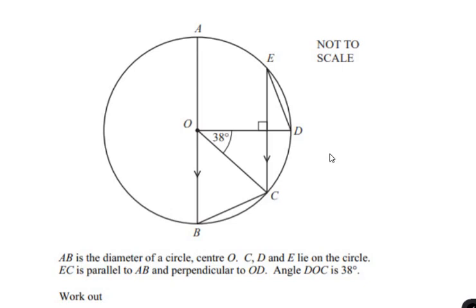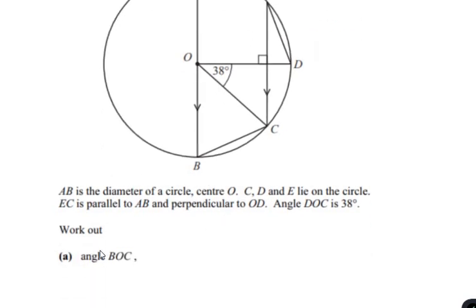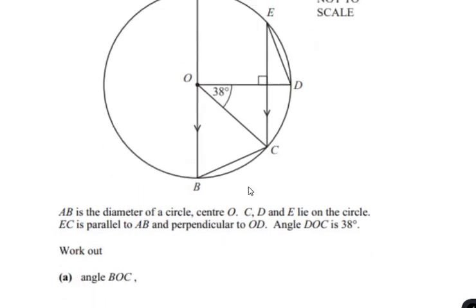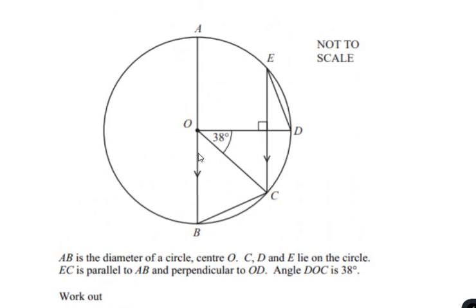Hello and welcome to my channel. In this video we are going to solve an example on circle theorems. AB is the diameter of a circle with center O. The points C, D, and E lie on the circle. Line EC is parallel to line AB and perpendicular to OD, or at 90 degrees to OD. Angle DOC is given as 38 degrees. Work out angle BOC.